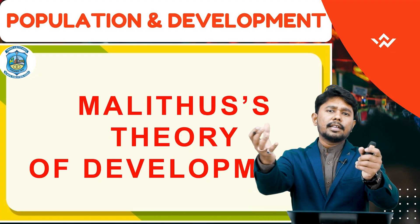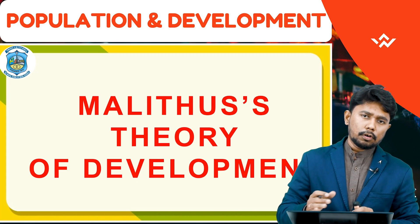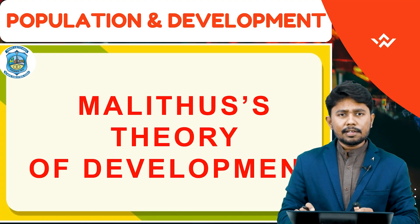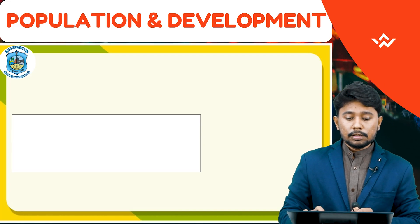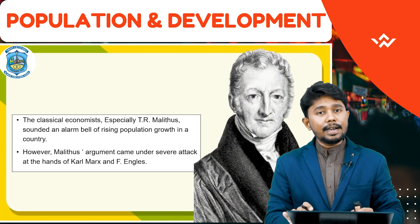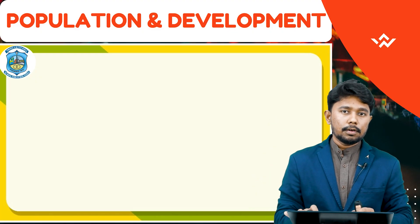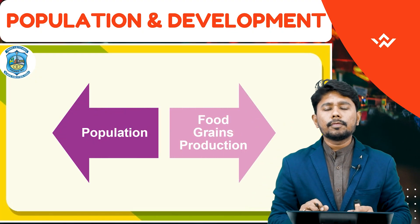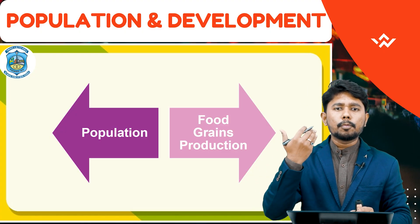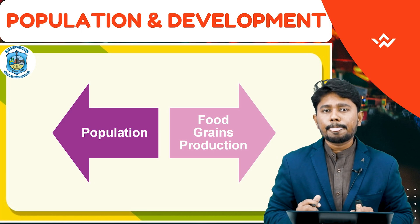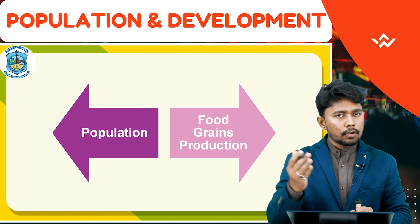We can understand this further with Malthus's theory. Malthus was a classical economist who gave a theory on economic development. He identified two key indicators: population and food grains. According to Malthus, population increases in geometric progression — 2 to 4, 4 to 8, 8 to 16, 16 to 32, 32 to 64, and so on.